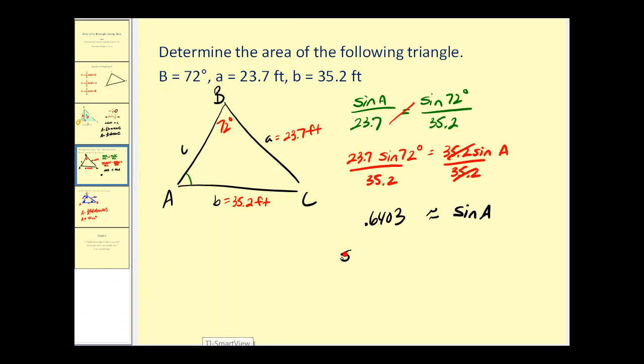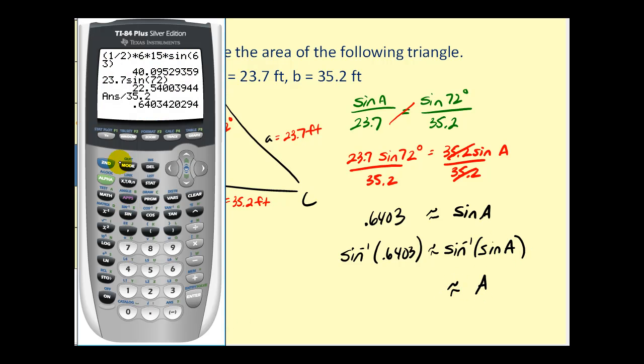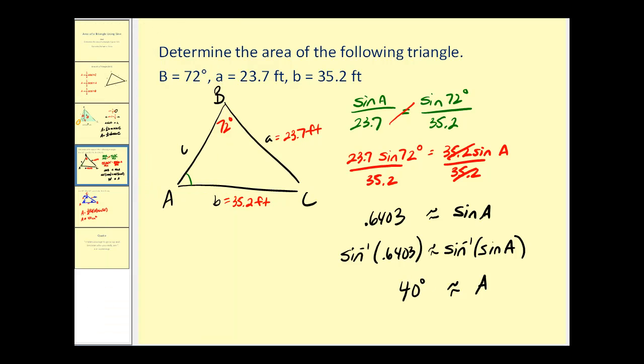Now if we take the inverse sine on both sides, angle A is approximately equal to 40 degrees. Now remember, using the law of sines, this would fall into the ambiguous case. There is another angle that has a sine function value of 0.6403 over in the second quadrant: 140 degrees. But that would not be possible since 140 plus 72 is more than 180 degrees. So we do only have one possible measurement for angle A.